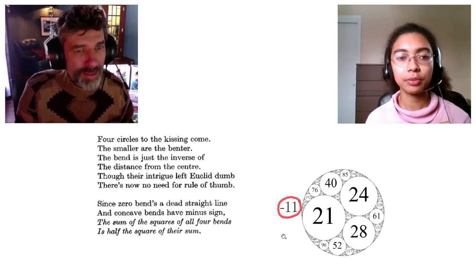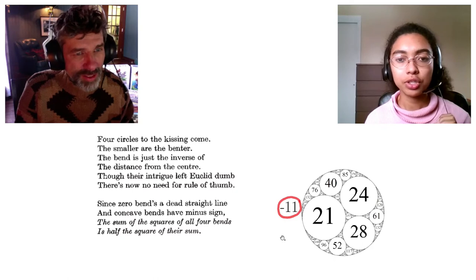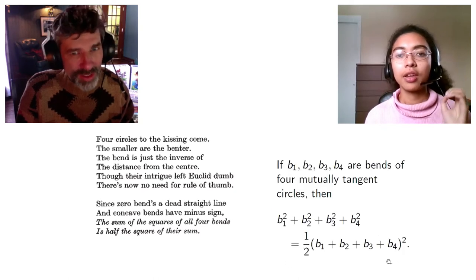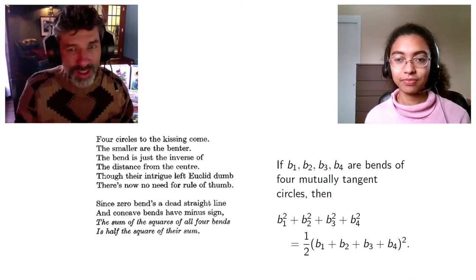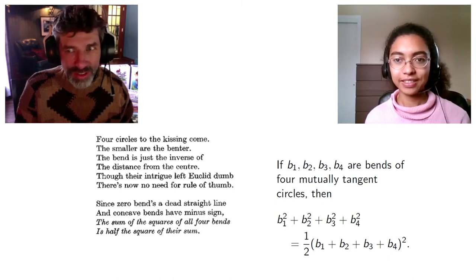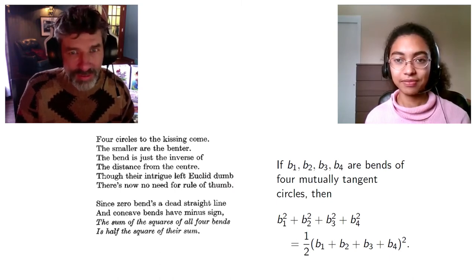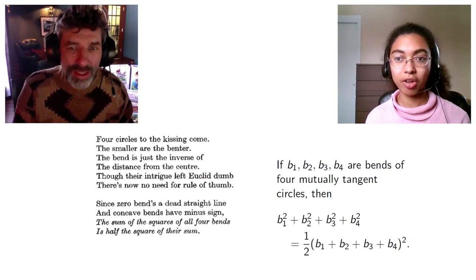So, the sum of the squares of all four bends is half the square of their sum, which leads you to have an algebraic equation. These are for the circles that touch, the four that touch. Yes. Any four that touch. Yes. Right. Any four that all touch each other.